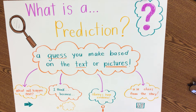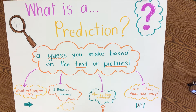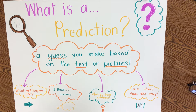We've already learned about asking questions, and one of the things I said is that when we ask questions about a story or something else, it helps us make a prediction. So today we're going to talk about what in the world is a prediction. A prediction is a guess you make based on the text you are reading or the pictures that you see.